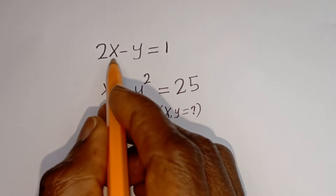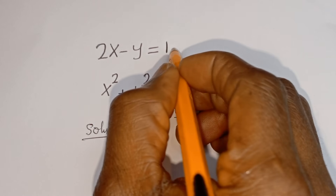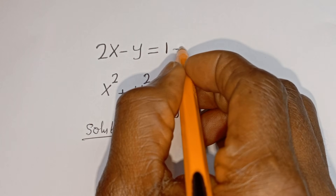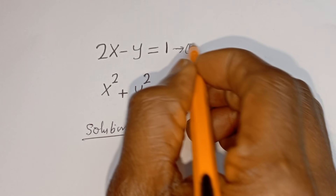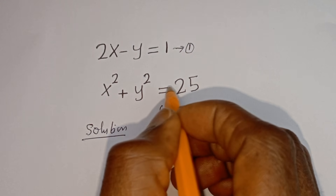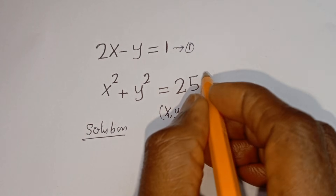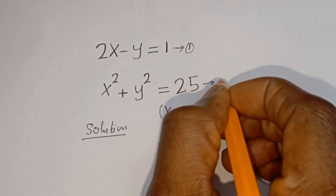We have 2x minus y is equal to 1 — let's call this equation 1. And x squared plus y squared is equal to 25 — let's call this equation 2.